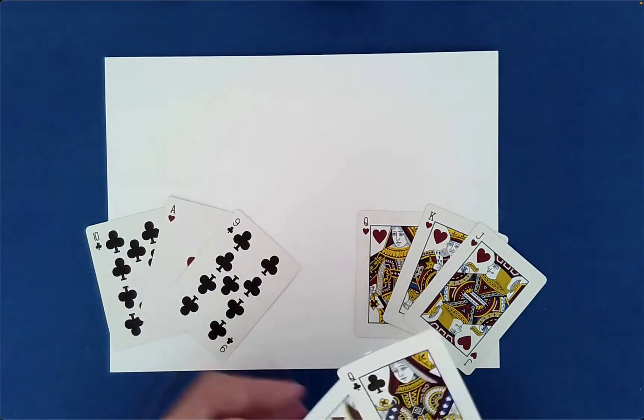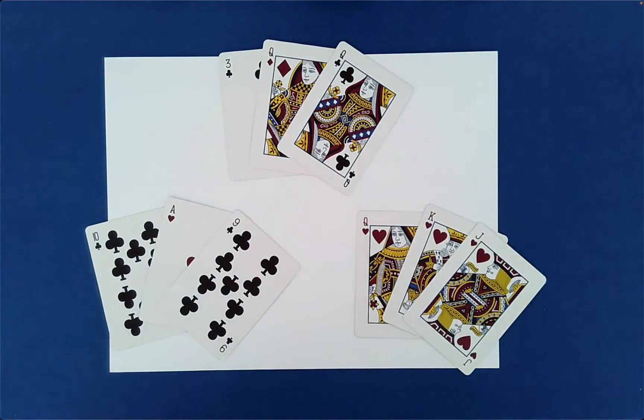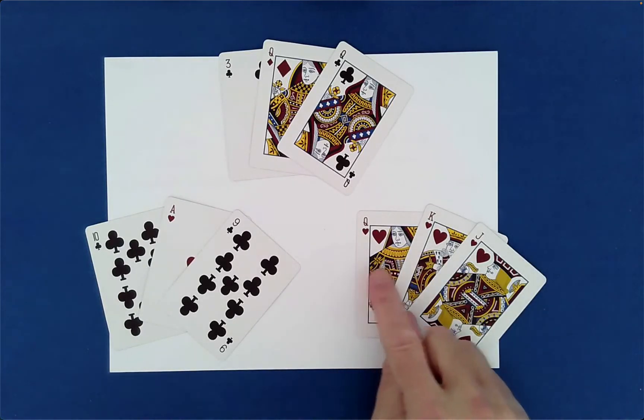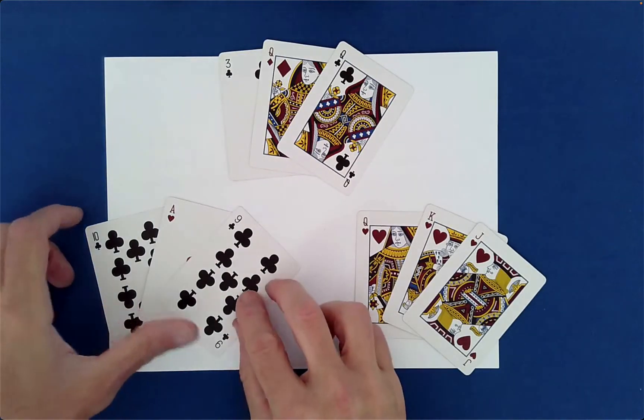What are these just out of interest? Oh look at that, we have the queen of diamonds and the queen of clubs. I said nothing of those. Wow, a perfect prediction.